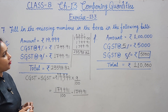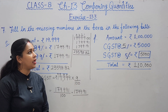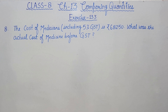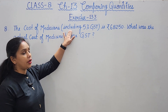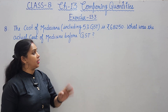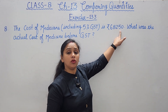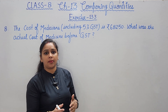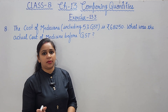Question 7, fill in the missing numbers in the boxes in the following bills, is complete. Next, question number 8: the cost of medicines including 5% GST is rupees 682.50. CGST and SGST are both included in this total. What was the actual cost of medicine before GST?